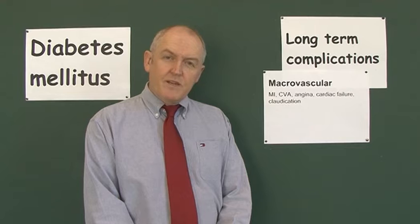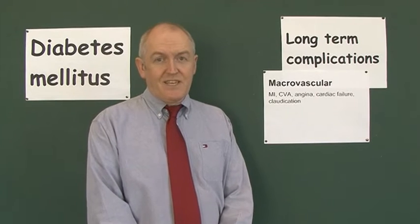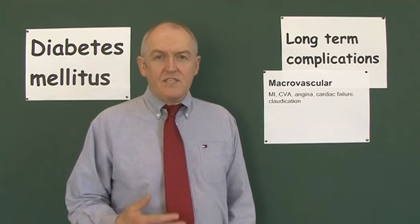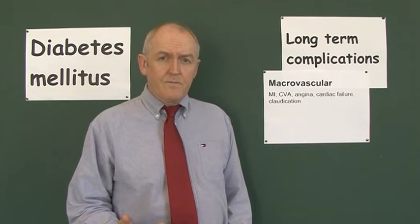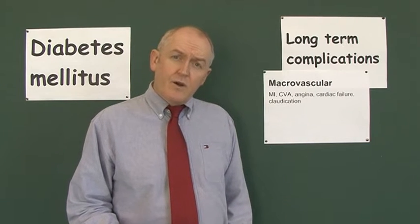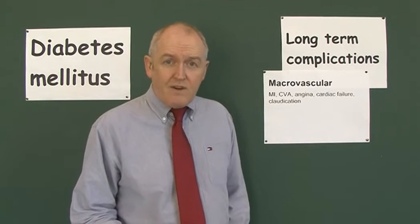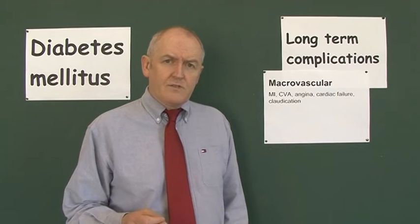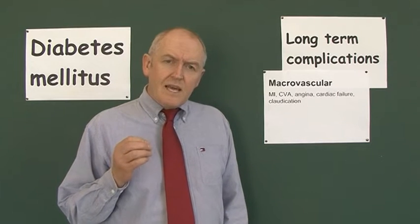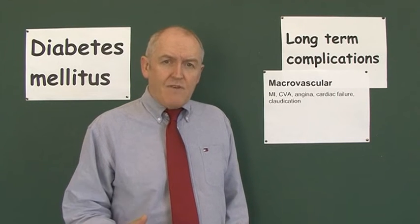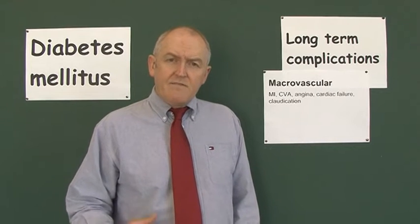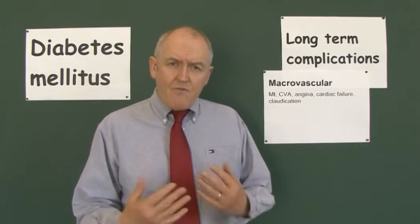One of the long-term complications of diabetes is macrovascular disease. Macro means big — this refers to the larger blood vessels. Shortly we are going to be looking at microvascular disease, which involves the small microscopic blood vessels. But let's start off with macrovascular complications, and what we're talking about here is the development of atheroma.